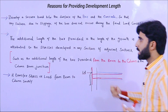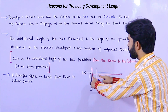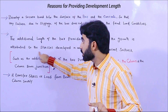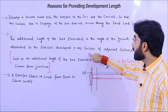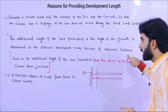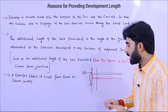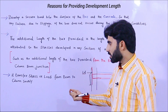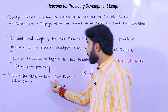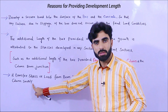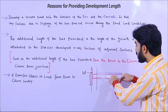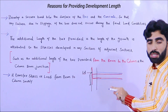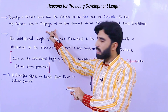The second reason: this additional length — the development length — is provided as the length attributed to the stresses developed in any adjacent section. We provide development length at the end of the support because at that end we have maximum shear stresses. It transfers the stress and load from the beam to the column smoothly. Due to these maximum shear stresses, slippage can occur, so development length is provided to prevent it.